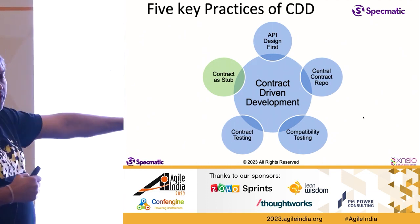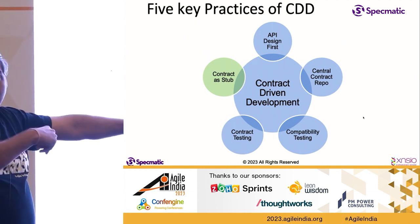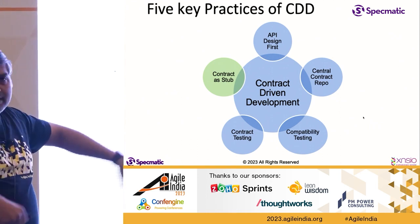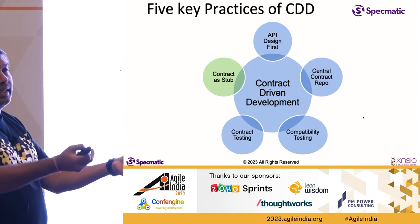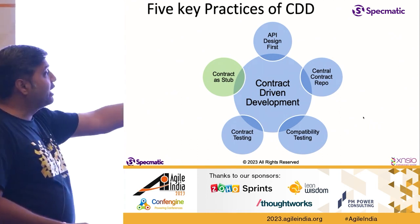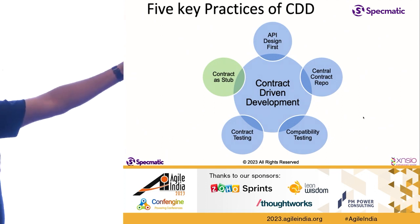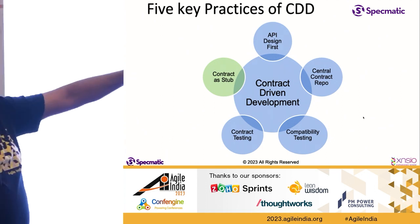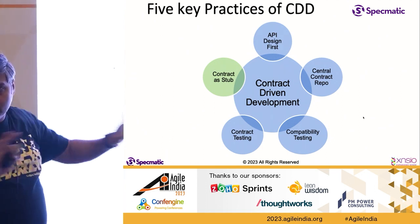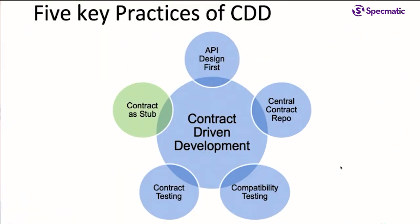You need to run this as a contract test in the pipeline — the provider's pipeline — so that any time you basically try to build, you first make sure you are still in line with the contract that you agreed on. All of this is automated, so there's no manual stuff. And finally, as a consumer, you can work off the same contract. That's the five practices in contract-driven development.